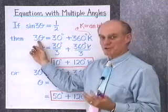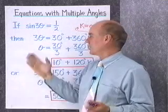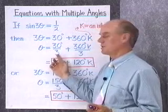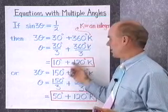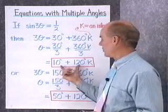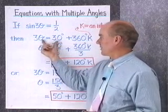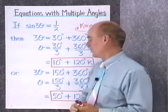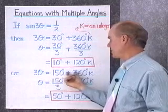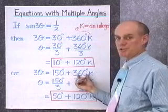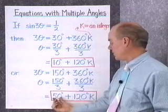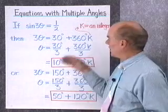This gives me the solutions for 3 theta, but I want solutions for just theta, so I need to divide both sides by 3. That gives theta equals 30 divided by 3 plus 360k divided by 3, which is 10 degrees plus 120 degrees times k. For the quadrant 2 solution, 3 theta equals 150 plus 360k, divide by 3, giving 50 degrees plus 120 degrees times k.